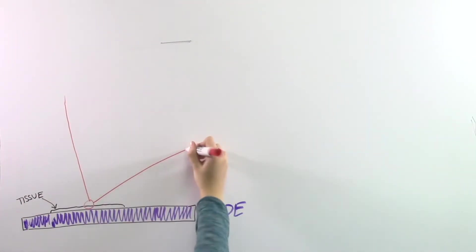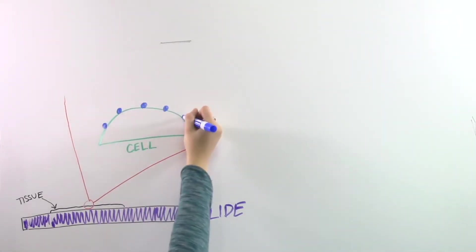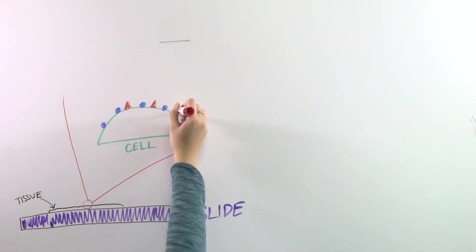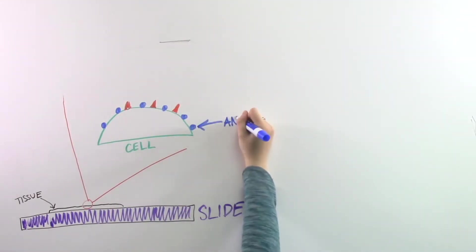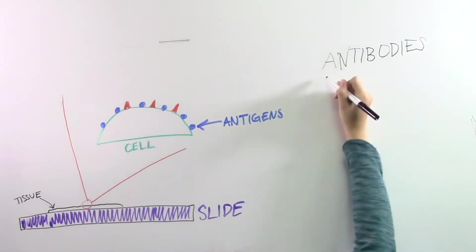Let's zoom in. The tissue section is made of cells. On a cell are different shaped receptors called antigens. These antigens bind to Y-shaped things called antibodies.